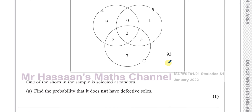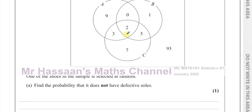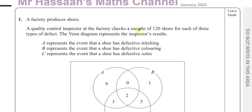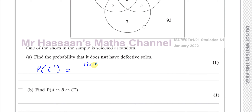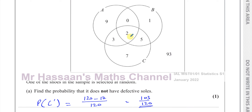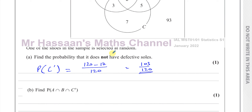One of the shoes in the sample is selected at random. Find the probability that it does not have defective soles. Soles is C, which is this circle here, so we need to find the probability that it's not in circle C — everything apart from those values. That's 120 minus 17 over 120, which gives you 103 over 120. That's all the others apart from the 17 in circle C, so 94 plus 9 equals 103 out of 120.